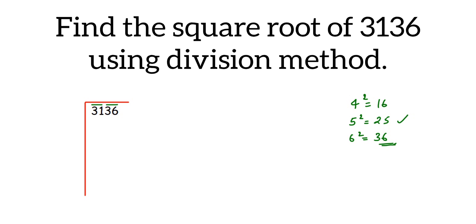5 times 5 is 25. Subtract it. We get 6 as a remainder. Now drop the next pair. So when you drop, drop the entire pair, the whole pair. We get 636 now.